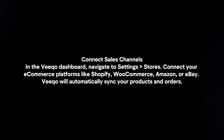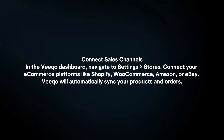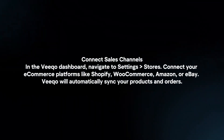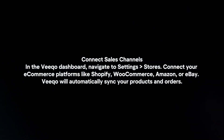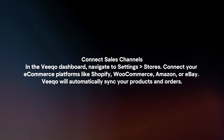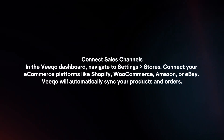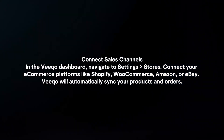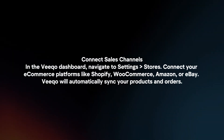Connect sales channels. In the Veeco dashboard, navigate to Settings, then Stores. Connect your e-commerce platforms like Shopify, WooCommerce, Amazon or eBay. Veeco will automatically sync your products and orders.